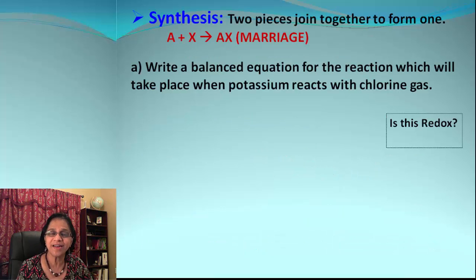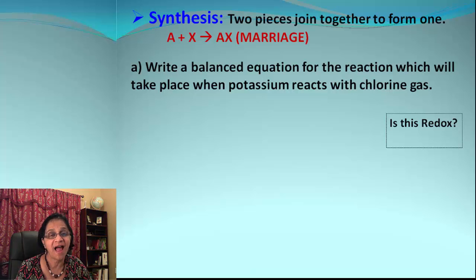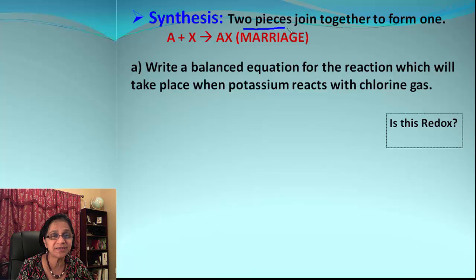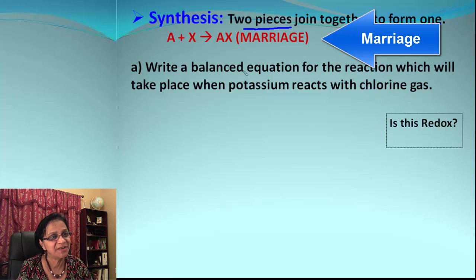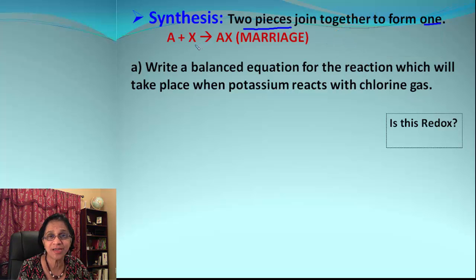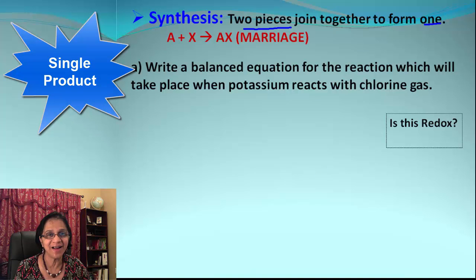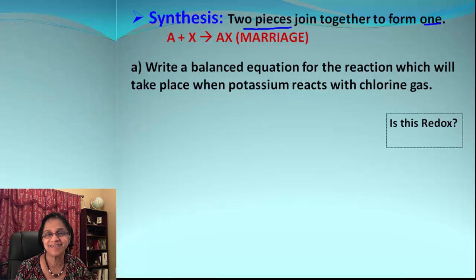Let's begin with the first one: synthesis. What is a synthesis reaction and how do we know a reaction is classified as synthesis? In this type of reaction, two pieces combine together and form one piece. You can also say it is like a marriage between two people. Symbolically, A + X come together and form AX as the couple. Also, keep an eye on the number of products — if there is only one product, it must be a synthesis reaction.